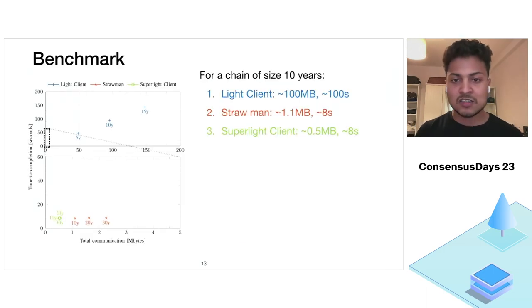So this brings us to the last part of the presentation. We also extensively benchmarked our construction with real network conditions and Ethereum like chain for chain sizes up to 30 years. And we can see that for a chain size of 10 years, a light client construction needs 100 megabytes of download and around 100 seconds to sync. Whereas a super light client construction only needs 0.5 megabytes of download and 8 seconds to sync. This is a 200X improvement in bytes downloaded and 10X improvement in time to sync.